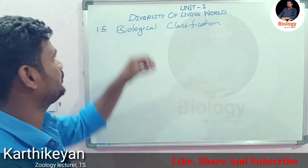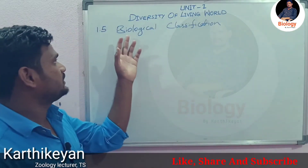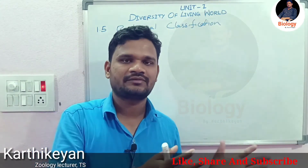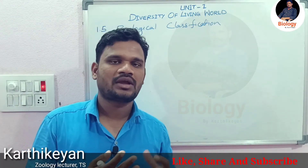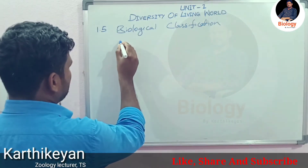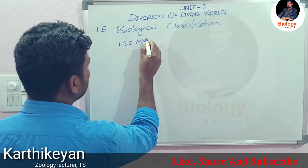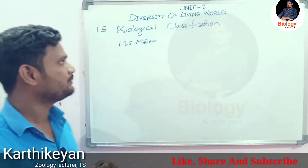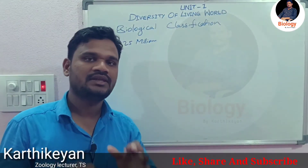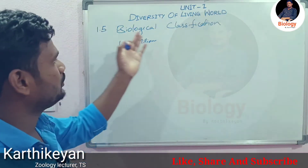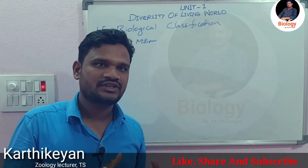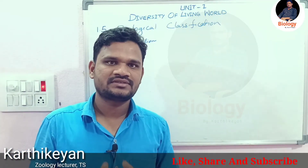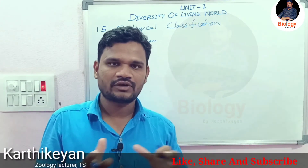Today's next topic is biological classification, your fifth topic in unit number one — diversity of the living world. Biological classification means grouping the living world's diverse organisms based on their characters, habits, or habitats. On earth, there are 1.25 million living organism species, and we have to classify these into groups. This is necessary because they show variations in habits, habitats, structural characteristics, and functional characteristics.